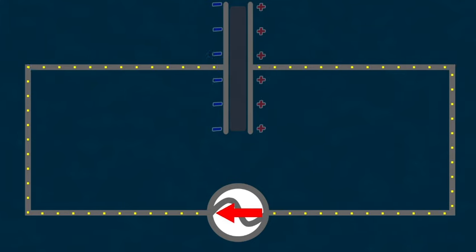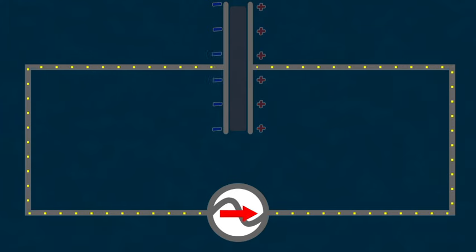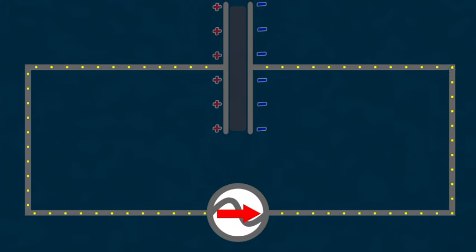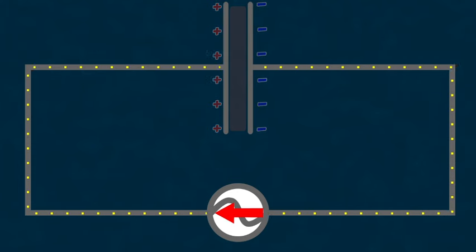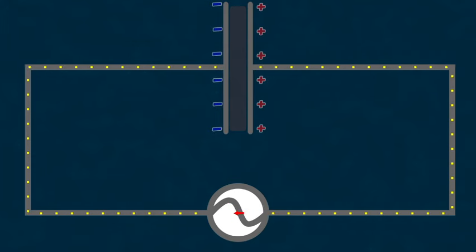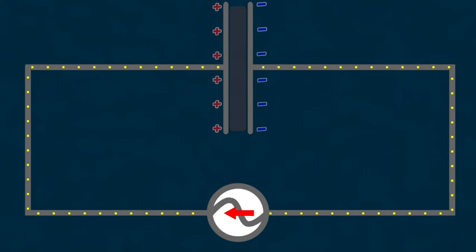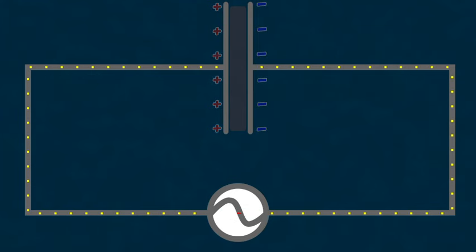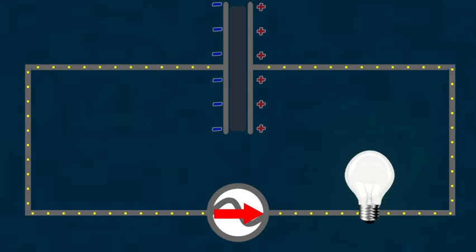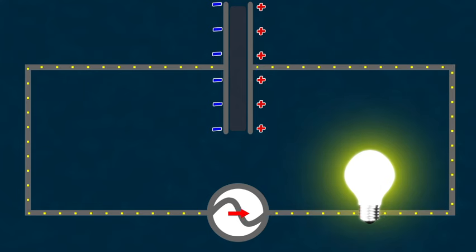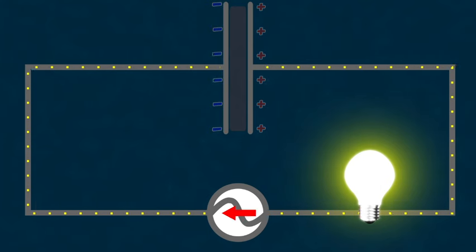Just in the first half cycle, when the field created by the power source is directed, let's say, to the right, positive charge will accumulate on the right plate and negative charge on the left. In the next half cycle, when the direction of the field changes, charges will start flowing from the left plate to the right plate. Thus, the capacitor will be recharged in the opposite way. This process will repeat every half cycle. In other words, the current in the circuit, if we have correctly selected the capacitor parameters, will flow constantly. And if we connect, for example, a light bulb to such a circuit, it will light up. However, no current will flow through the capacitor itself, neither direct nor alternating.